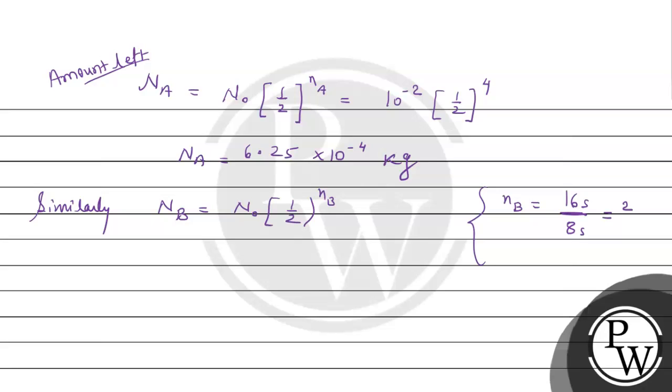In the same way, 10 to the power minus 2, 1 by 2 to the power N_B which is 2. Finally, we have N_B is equal to 2.5 into 10 to the power minus 3.